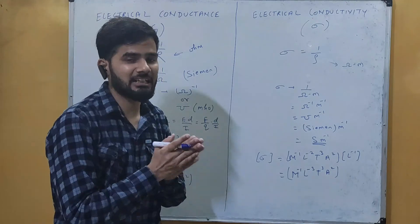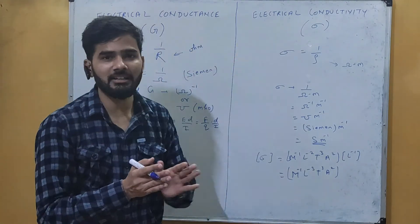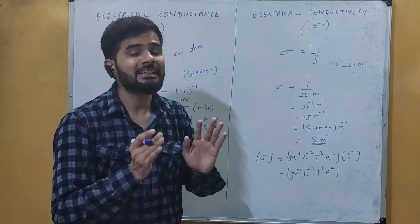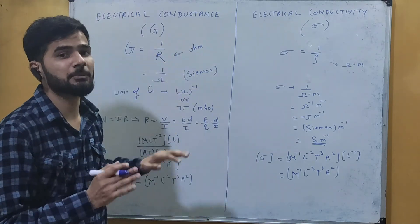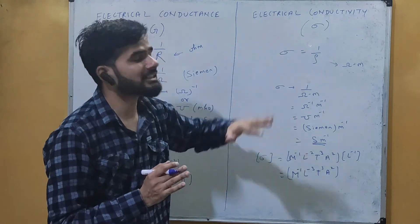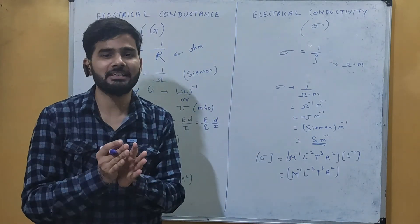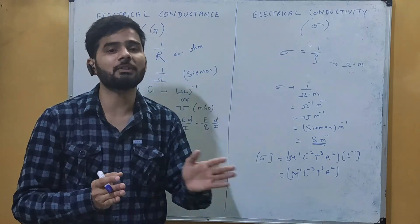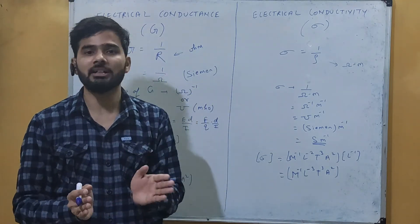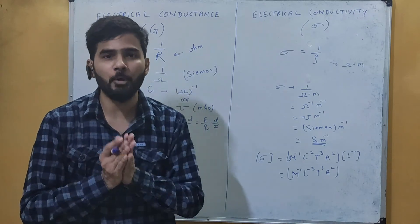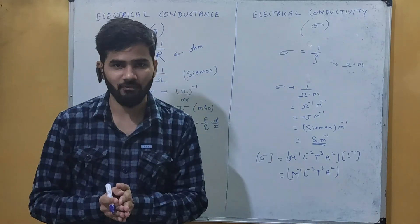To summarize: electrical conductance is the reciprocal of resistance, and electrical conductivity is the reciprocal of resistivity. Both conductance and conductivity are properties of a material, just as resistance and resistivity are properties. This is all about electrical conductance and electrical conductivity.